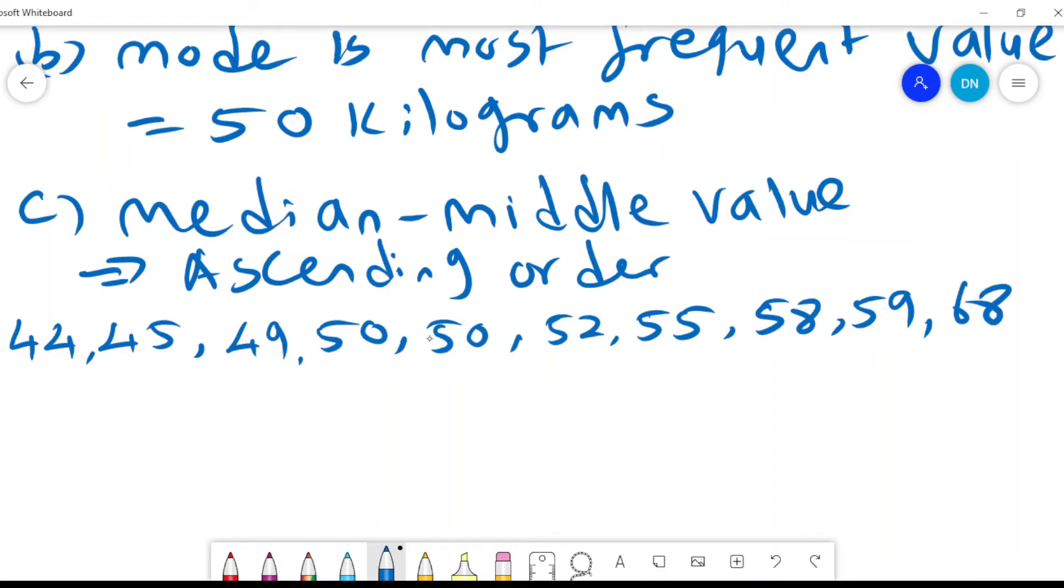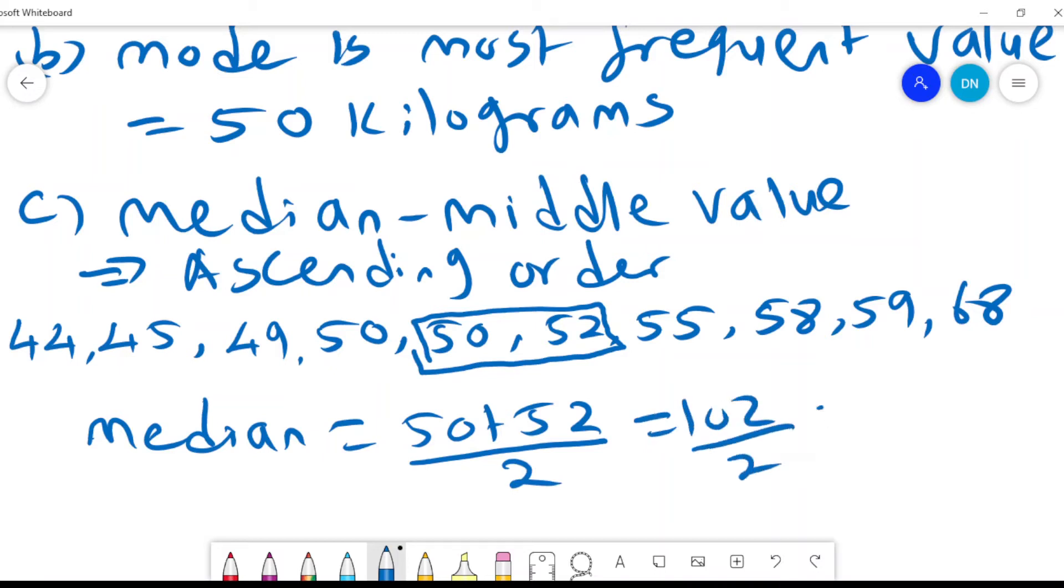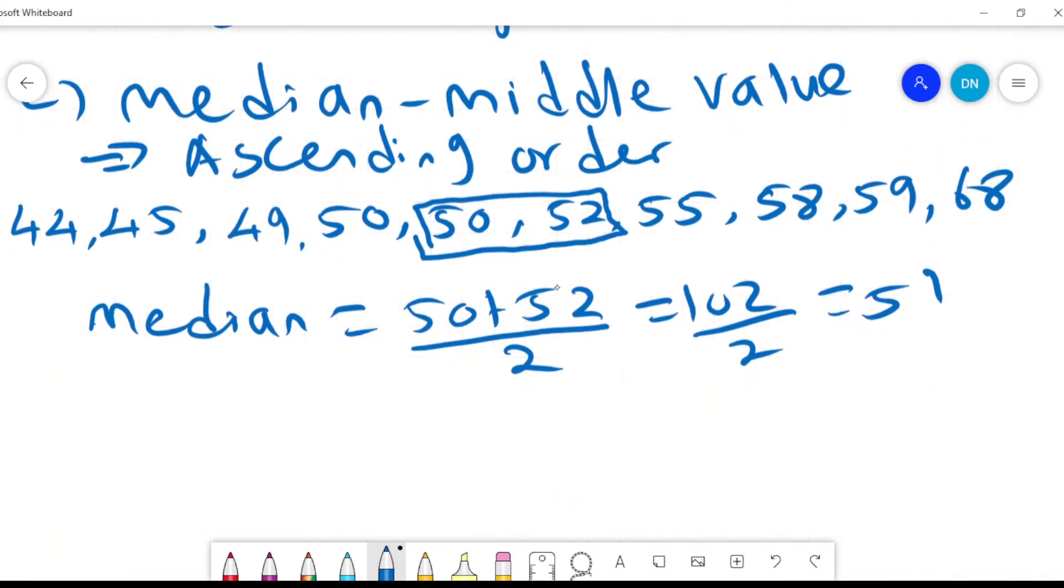So when we look at these values, because they are 10, then we realize that these two values are the ones at the center. Yes, those two values. So then I can say the median is given by 50 plus 52 divided by 2, which is 102 divided by 2, which is 51. And so you'll see that our median is 51 kgs. So that is how we compute the median value for the ungrouped data and also for the mode and for the mean.